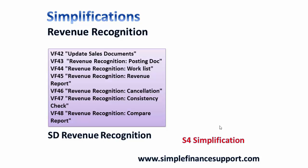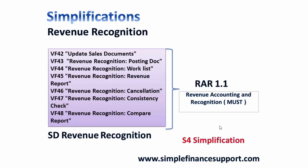All these transaction codes are going away with S4 simplification. In the future, SAP delivers an independent module called Revenue Accounting and Recognition — referred to as RAR version 1.1 — which is used for all revenue accounting and reporting.